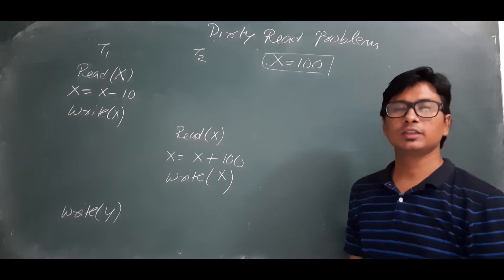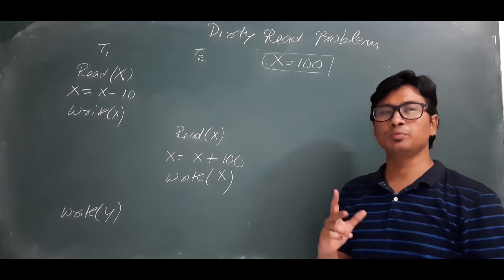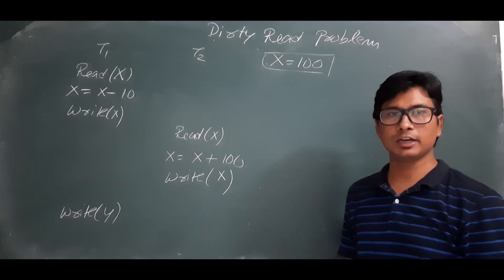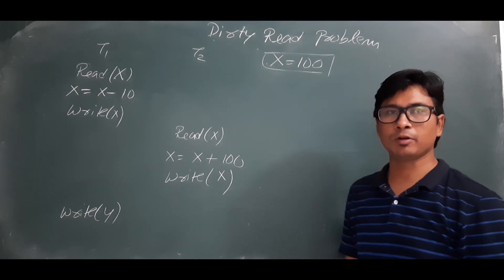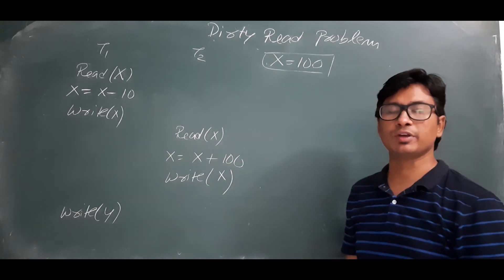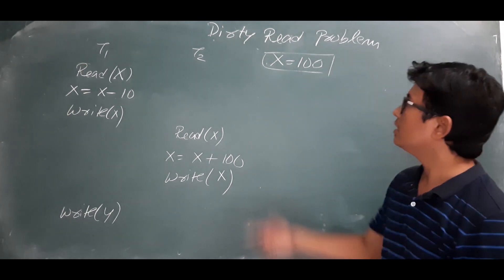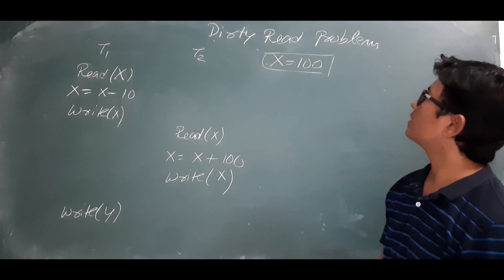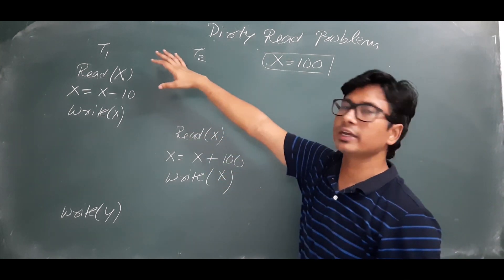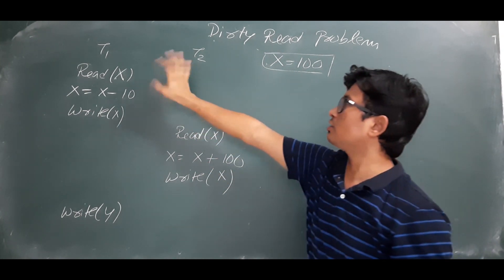Good morning students. In the last video we discussed two problems: the lost update problem and the unrepeatable read problem. We will now discuss another problem we face when executing transactions concurrently — that is the dirty read problem. To explain it, I have taken a schedule which consists of two transactions.